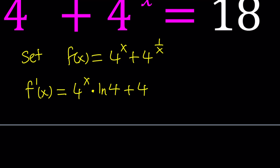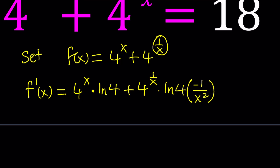For the second term, 4 to the power 1 over x: again, write the same exponential expression, multiply by ln of the base, and then multiply by the derivative of 1 over x. The derivative of 1 over x is something you should memorize — it's negative 1 over x squared. If you forget it, you can always write 1 over x as x to the power of negative 1 and use the power rule.